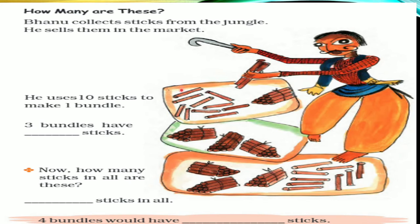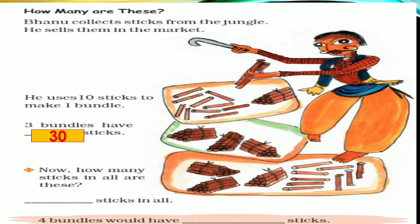So 10 sticks make 1 bundle. 3 bundles will have how many sticks? 30 sticks. Now, how many sticks in all are these? 3 bundles, that is 30, and how many loose? 1, 2, 3, 4, 5, 6, 7, 8, 9. 30 and 9 make 39 sticks in all.